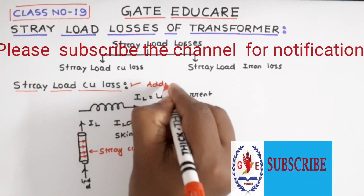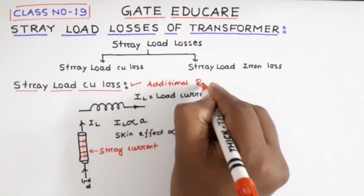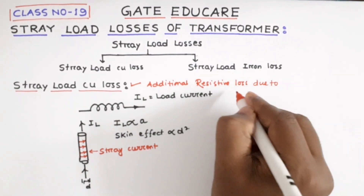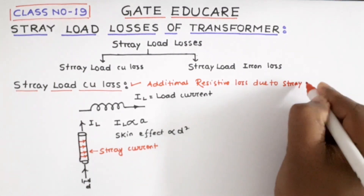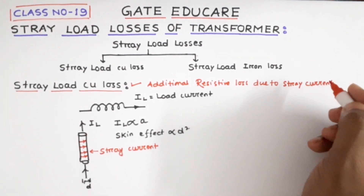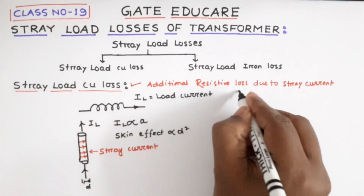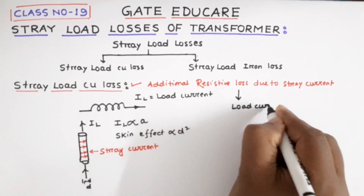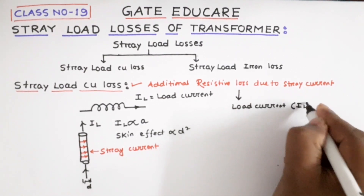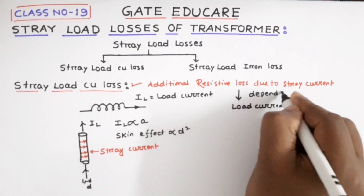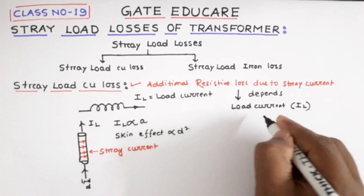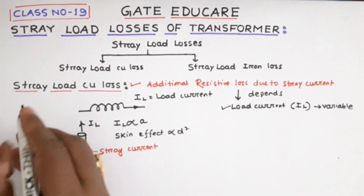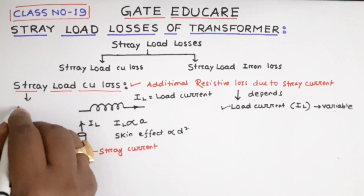The additional resistive losses due to this stray current are called stray load copper loss. The stray load copper loss depends on the load current IL. Since load current is a variable parameter, therefore stray load copper loss is also a variable parameter.